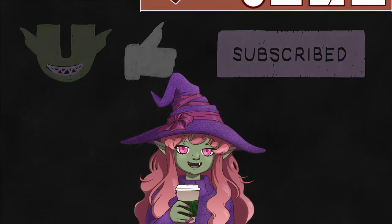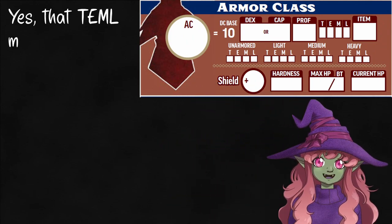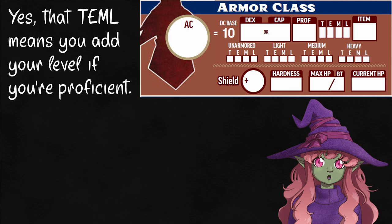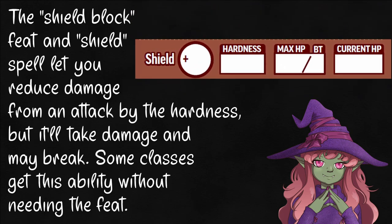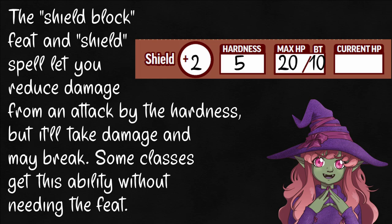Let's move on to AC. Every armor has a dexterity cap — you use whichever one's lower, same thing that you're used to — but you'll notice we have a proficiency here. That's because anyone can wear any type of armor, but you don't get as much out of it if you aren't trained. Notice that shield's not here? In Pathfinder, you raise your shield to add it to your AC. There's also a common feat that lets you block incoming damage as a reaction. Hardness is how much you reduce the incoming damage, but you both take any remaining damage. BT is the broken threshold — if your shield's HP is below the BT, it's broken but can be fixed; if it hits 0, it's turned to dust and you need a new shield.